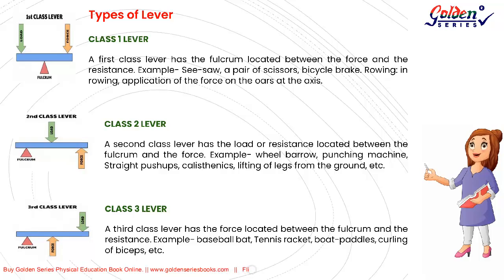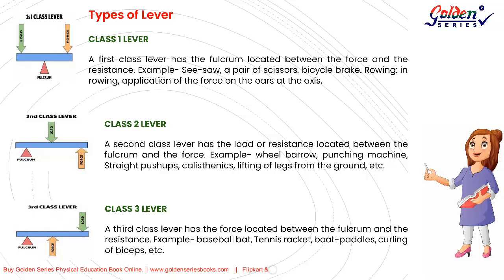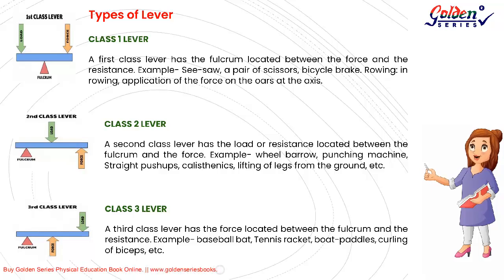Class 2 Lever: a second class lever has the load or resistance located between the fulcrum and the force. Class 3 Lever: a third class lever has the force located between the fulcrum and the resistance. Examples include a baseball bat, tennis racket, boat paddles, and curling of the biceps.